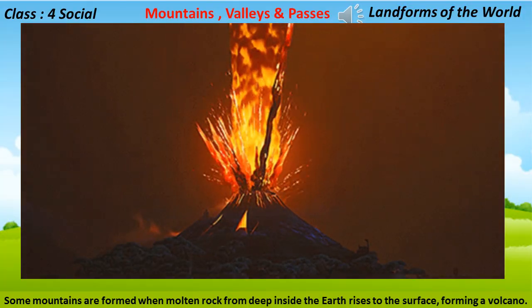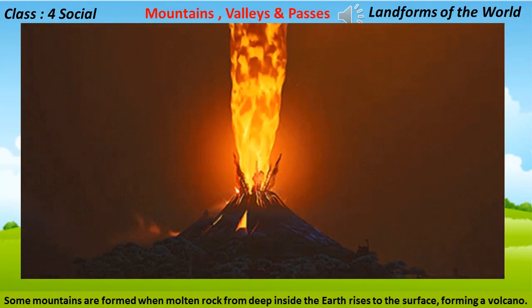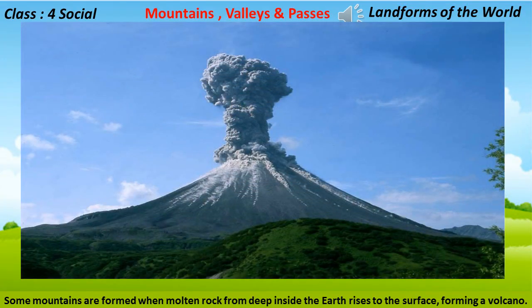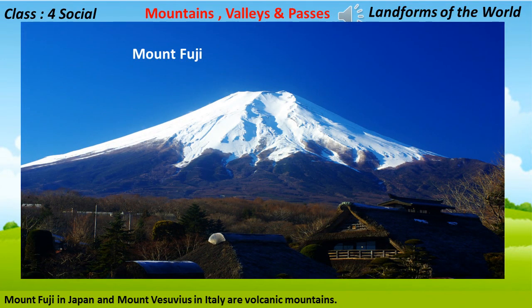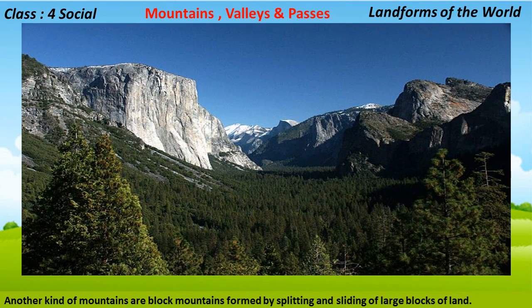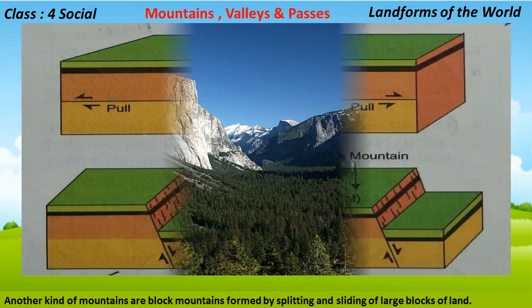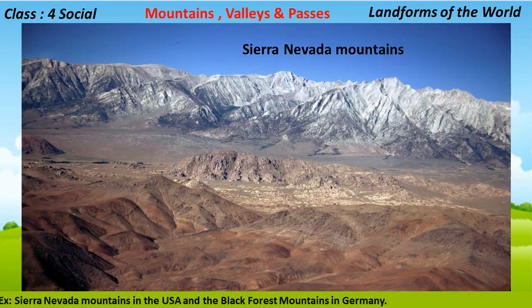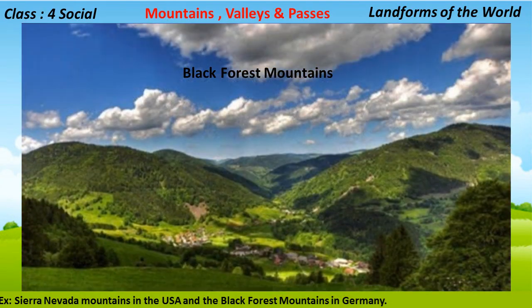Some mountains are formed when molten rock from deep inside the earth rises to the surface forming a volcano; they are called volcanic mountains. Mount Fuji in Japan and Mount Vesuvius in Italy are volcanic mountains. Another kind are block mountains, formed by splitting and sliding of large blocks of land. Examples are the Sierra Nevada mountains in the USA and the Black Forest mountains in Germany.